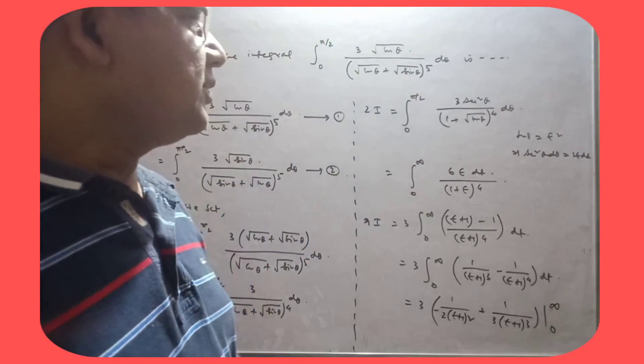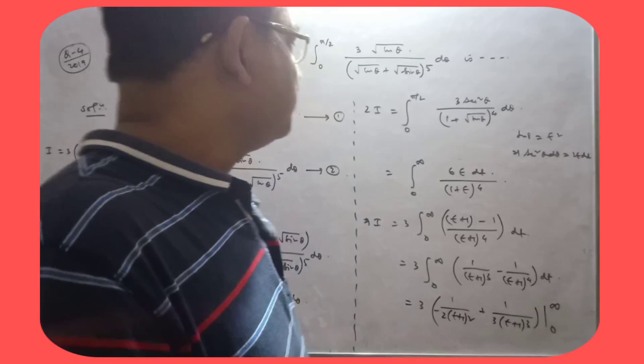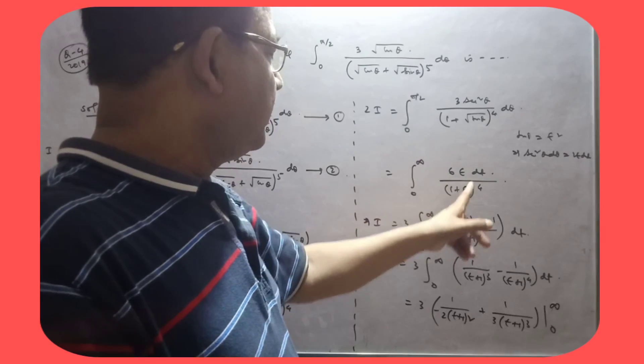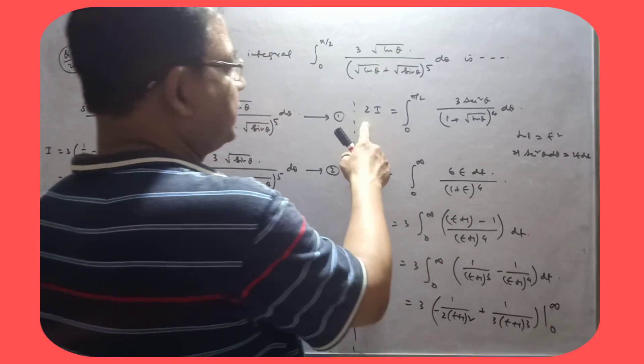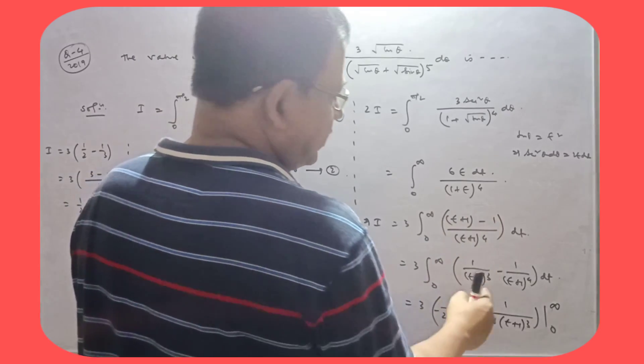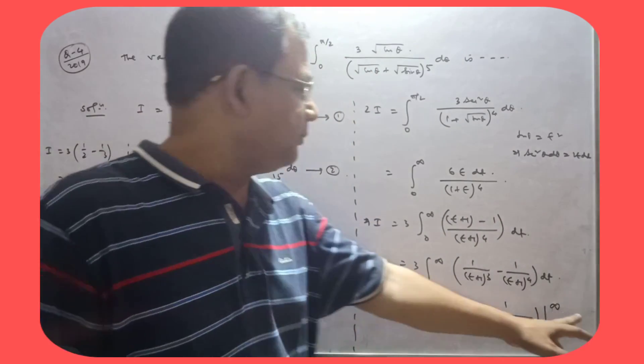So this, abhi, tan theta is 2, t square x square theta, d theta equal to 2t dt. Jab theta 0 hai, t 0 hai, theta pi by 2 hai, t infinity hai. So this, yeh pe 2 tha. So that is, 2 or 6 cancel, iso gya 3 hai. And iso separate karte, this kaba integrate kar diya, limit put kar diya.